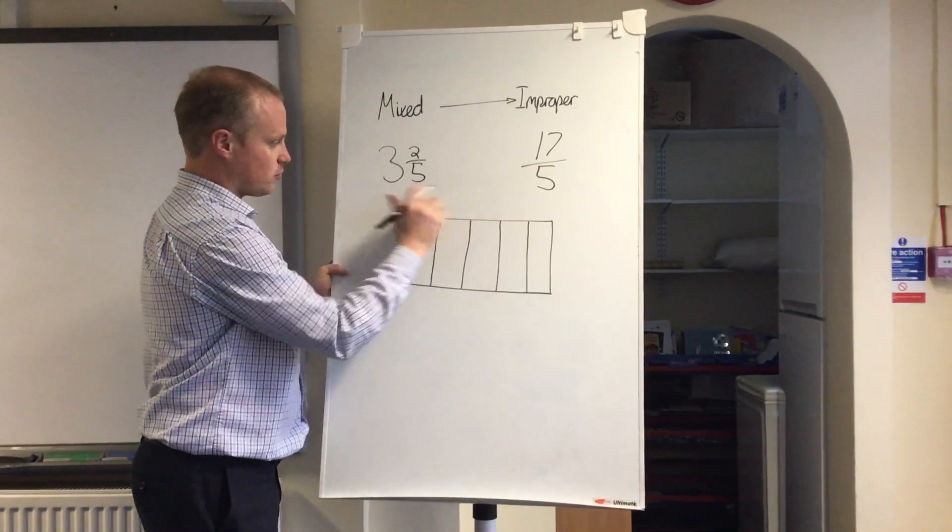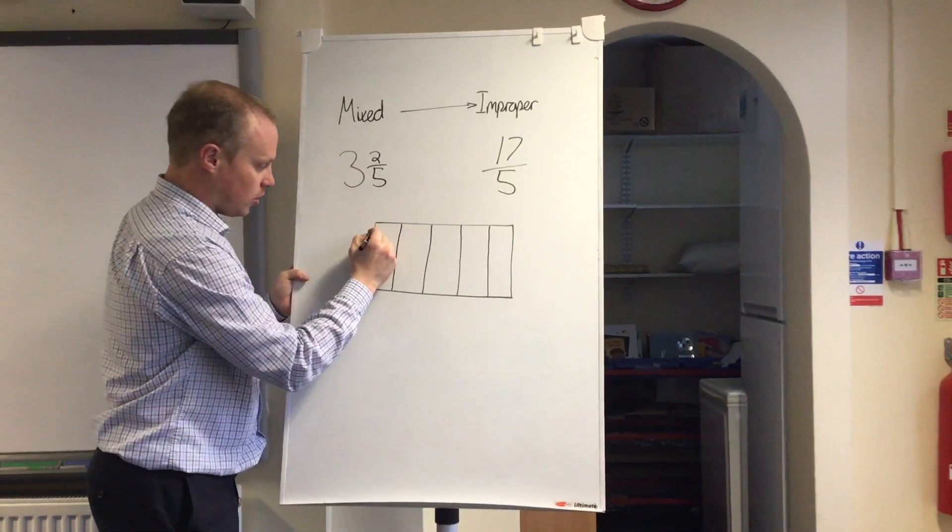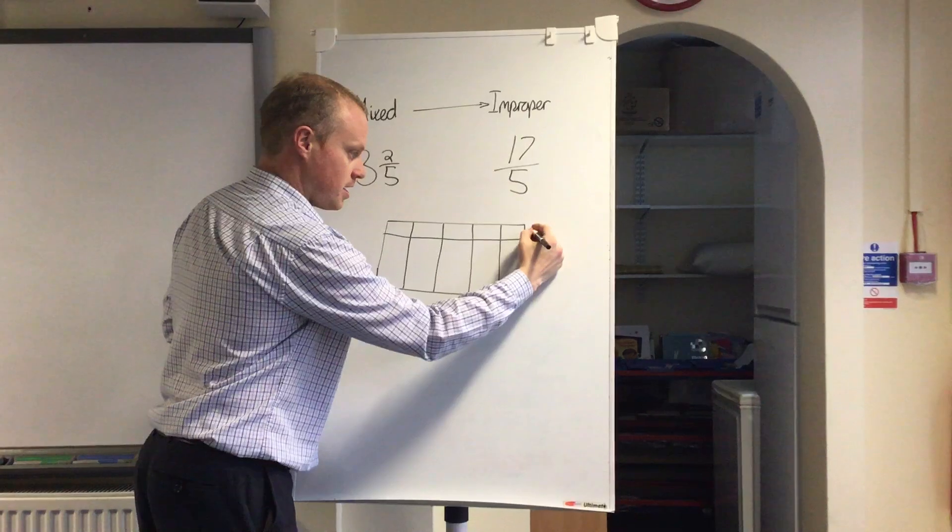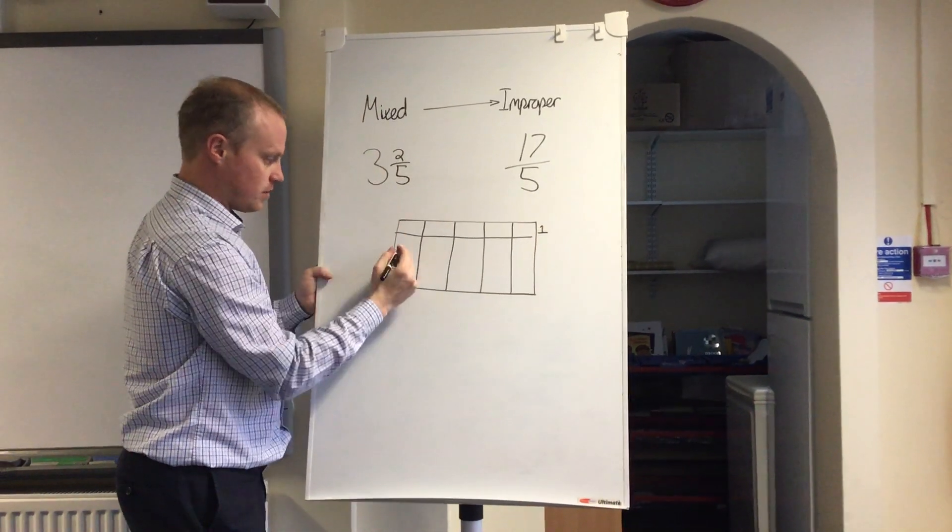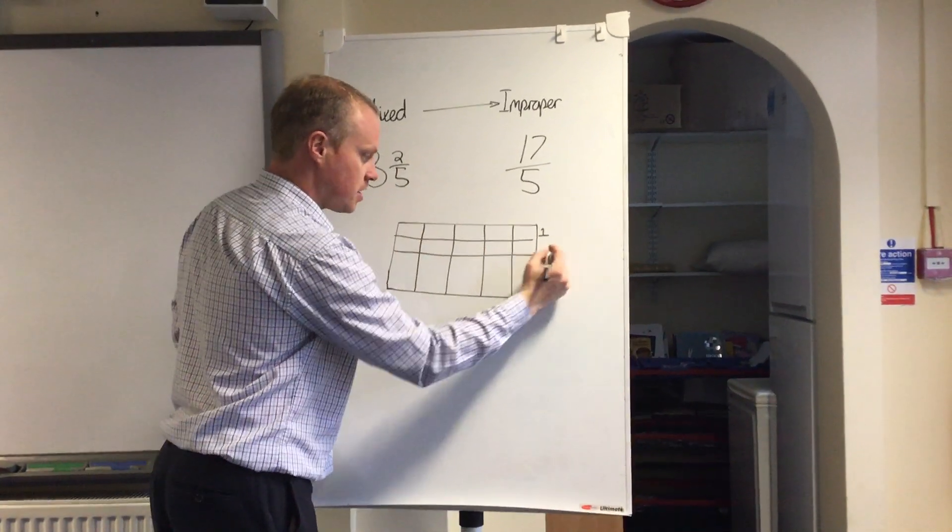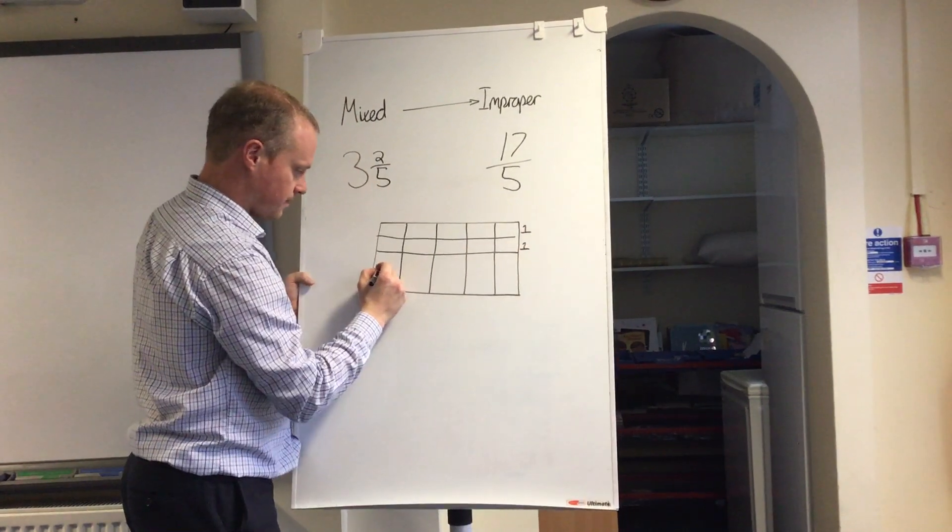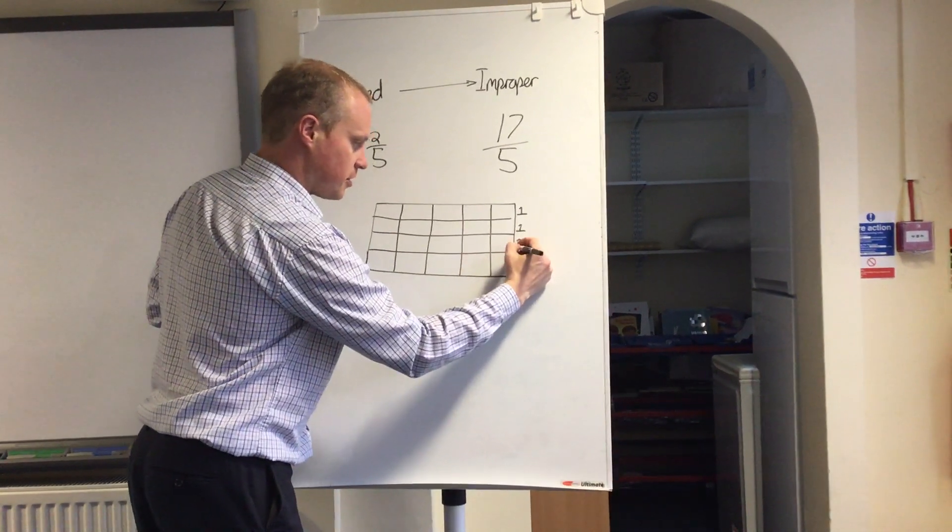Next, of these 5 equal parts, we've got 3 wholes. So if I draw a line across like that, that is 1 whole. But obviously we have 3 wholes, so there's my second, and there's my third whole.